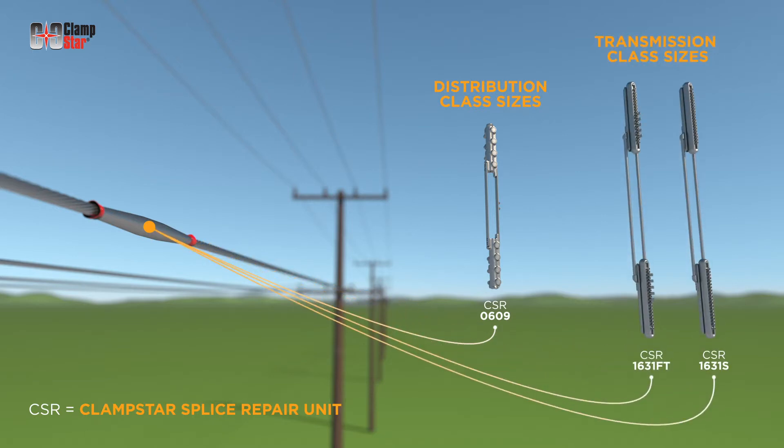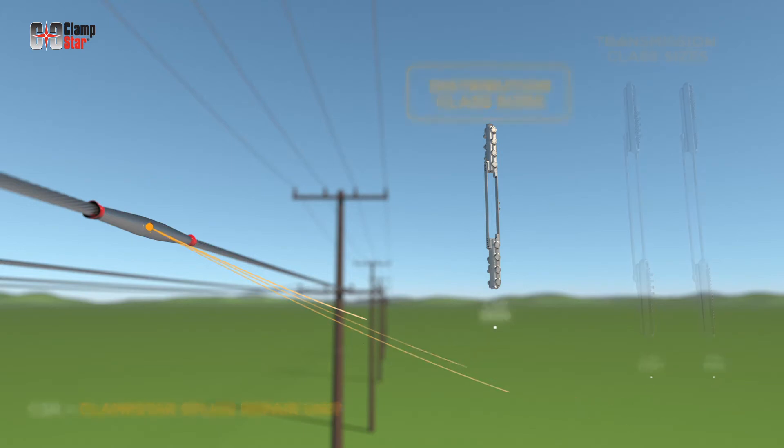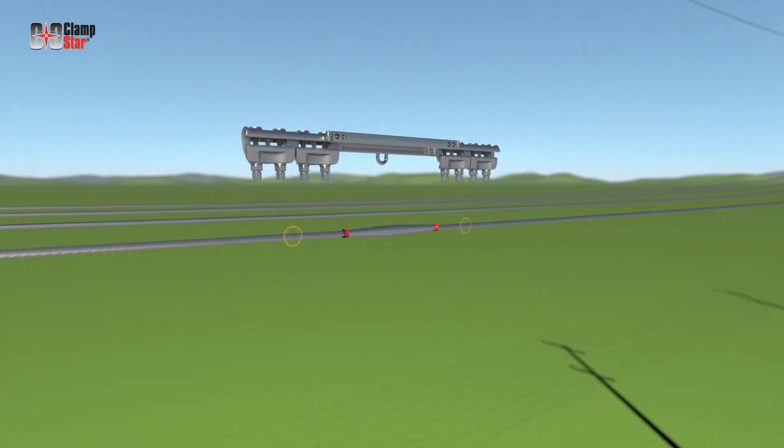All ClampStar Splice Units will restore the conductor connector system to full tension. This installation will be done using a distribution class unit.